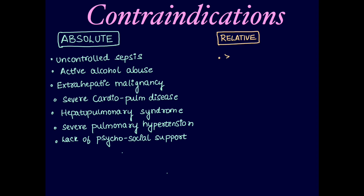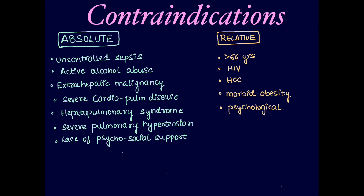Relative contraindications include age above 66 years, HIV, some cases of HCC, morbid obesity, and psychological instability. HCC not fitting the criteria is a relative contraindication for liver transplantation. The criteria will be discussed further in this video.